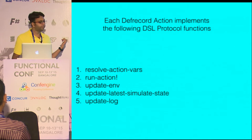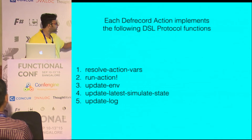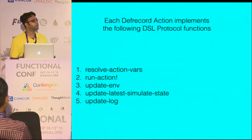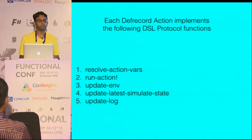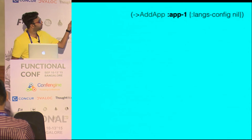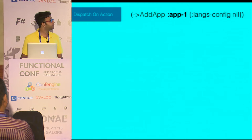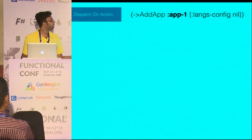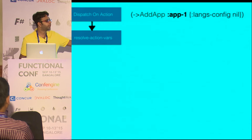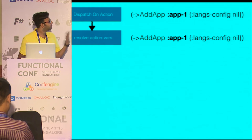Each def record action implements a certain protocol — a DSL protocol. Those actions are each part of a protocol called DSL protocol, which allows me to add behavior to each data. So here is a def record add-app where once I am adding the app, I want to call it app 1 with the argument lang-config. In resolve-action-vars there is no variable that I need to refer because I will be creating app 1 but not using any previous variable, so it just returns as it is.